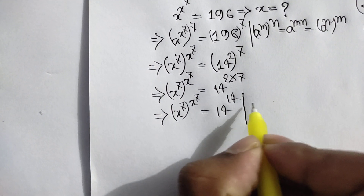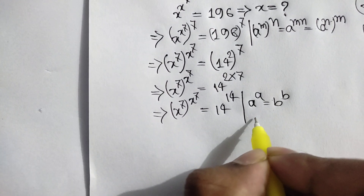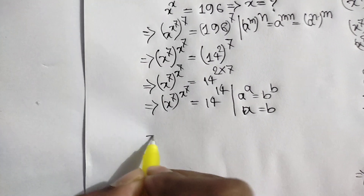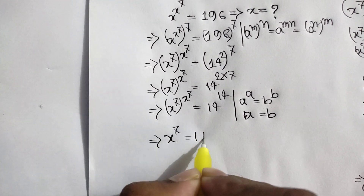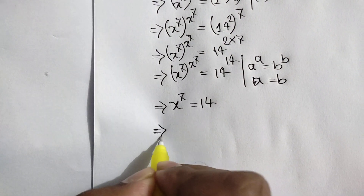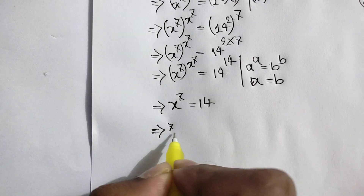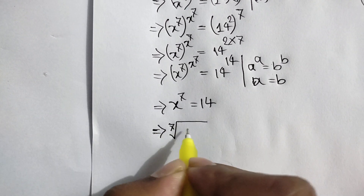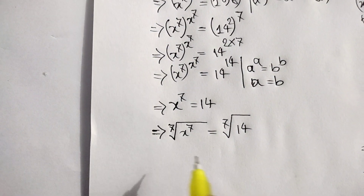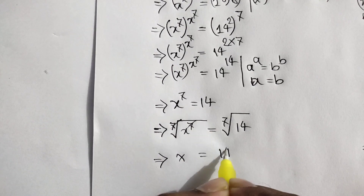Here we can apply this rule: a to the power a is equal to b to the power b when a is equal to b. So we can write x to the power 7 is equal to 14. Taking the 7th root on both sides, this cancels out, so x is equal to 14.